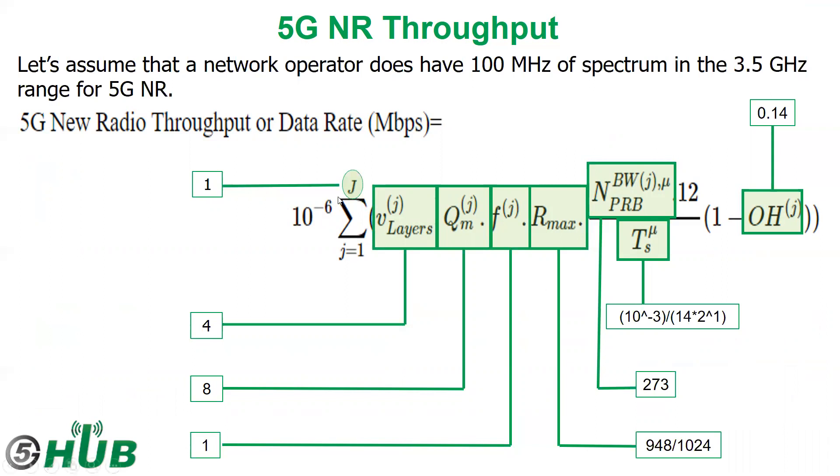The J will be carrier component 1. Number of layers, for example, 4. The modulation will be 256, so we have 8 bits. The scaling factor and R_max are fixed values as we see. Number of physical resource blocks per bandwidth per μ equal 1 will be 273. Here μ equals 1 and overhead 0.14.